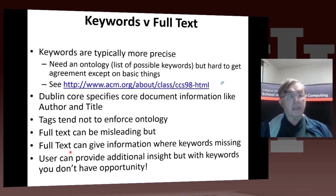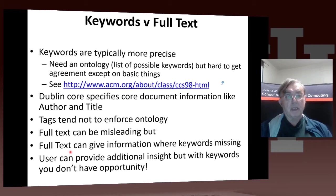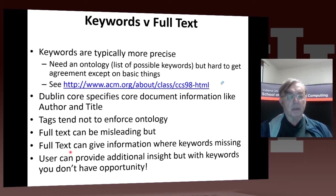We can study information retrieval with keywords and full text, which we'll discuss more later. Keywords are more precise but very hard to get accurate keywords for general documents, because that has to be done by people. Also, to use keywords you need a so-called ontology, which is a list of possible keywords, and it's difficult to get agreement on ontologies.